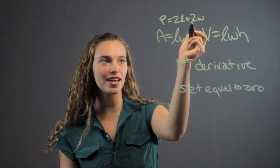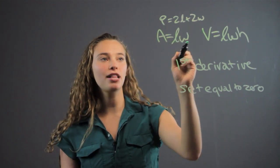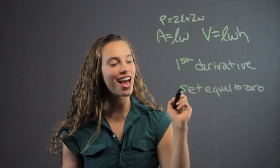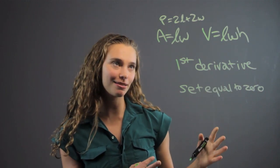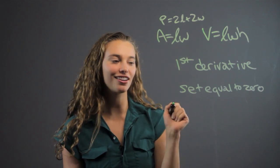You can use that equation to plug back into here. Then find the first derivative, then set it equal to zero. And that will give you the value when you've maximized the area of the rectangle in calculus.